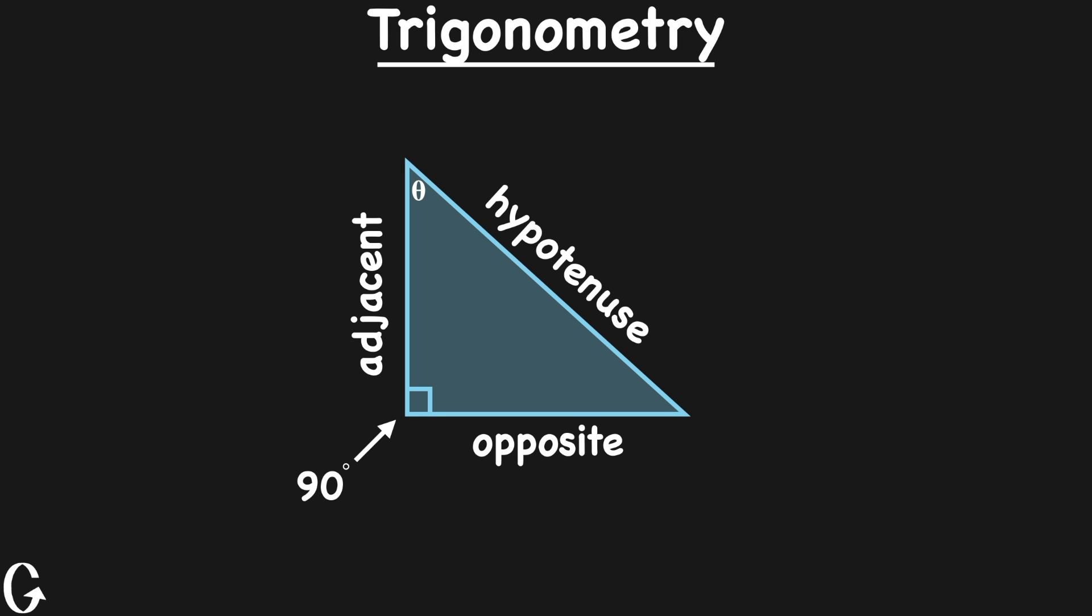Now, what happens if I want to define this other angle? Well, all I have to do is flip the terms opposite and adjacent. Watch. Notice, the opposite side to our angle of interest is located here now. And the adjacent side is located next to the angle. And the hypotenuse is still located across from the right angle. And that never changes. The hypotenuse always stays there, across from the right angle.